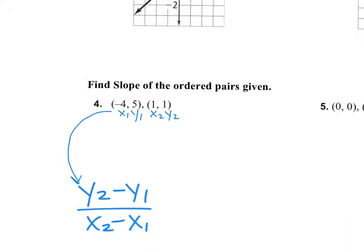So if I'm plugging that into the formula, I'm doing y2, which is one, minus y1, which is five, over x2, which is one, minus x1, which is negative four. So it's one minus a negative four. Here's where you have to be careful: what's one minus five? Negative four. What's one minus negative four? Five — plus a positive. Don't forget to do that. So your slope is negative four fifths.